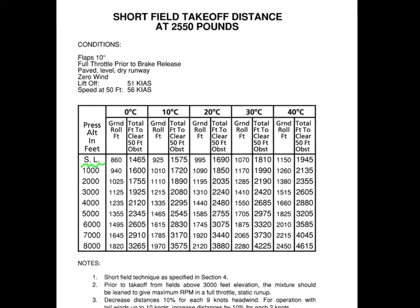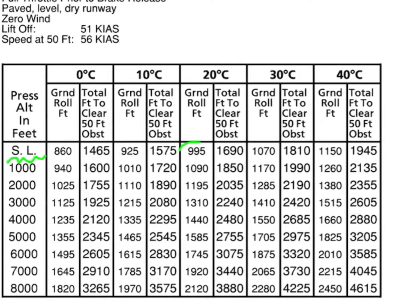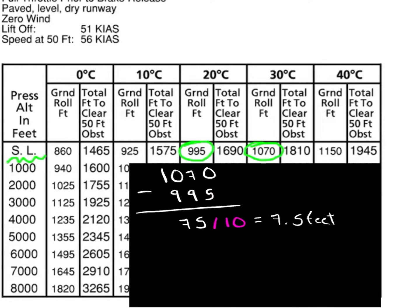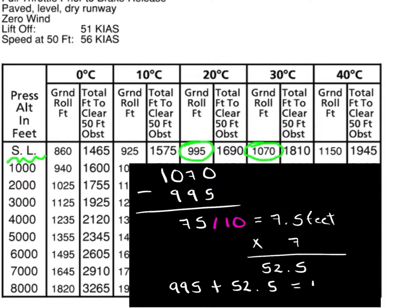Considering that our temperature is 27 degrees Celsius, we will have to interpolate between the values of 995 feet and 1070 feet for our ground roll distance, which is how long it will take the airplane to attain sufficient lift-off speed for rotation. The way we interpolate is by getting the difference between these two values, which is 75 feet, and dividing it by 10, which ends up being 7.5 feet. By doing this, we will know how much our distance changes for every degree of temperature change. Considering that we are 7 degrees higher than 20 degrees, we will multiply 7.5 times 7 and add this product to the 20 degrees Celsius value of 995 feet, which will make our ground roll a distance of 1047.5 feet.